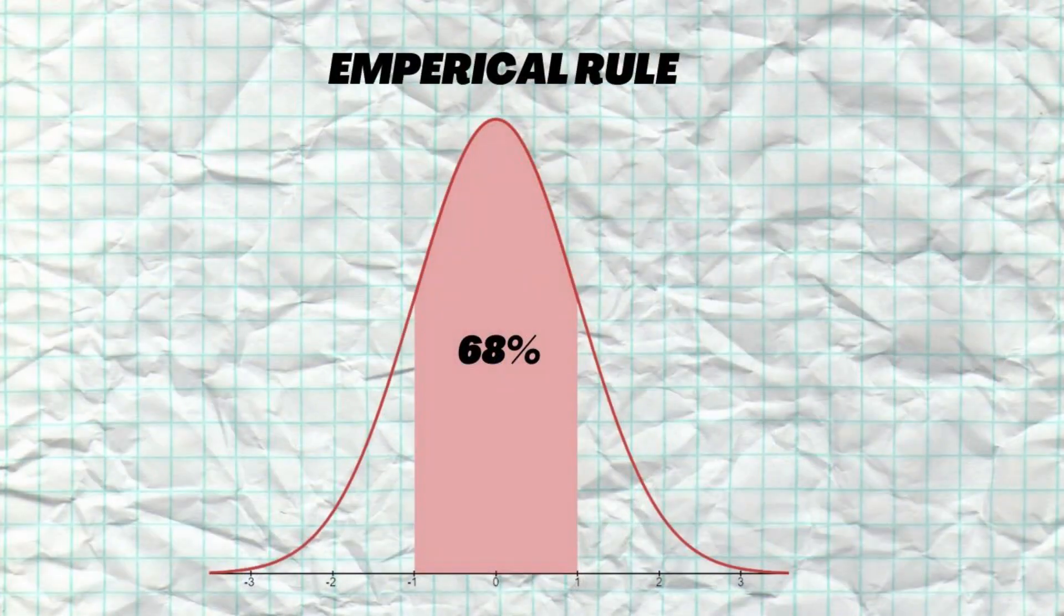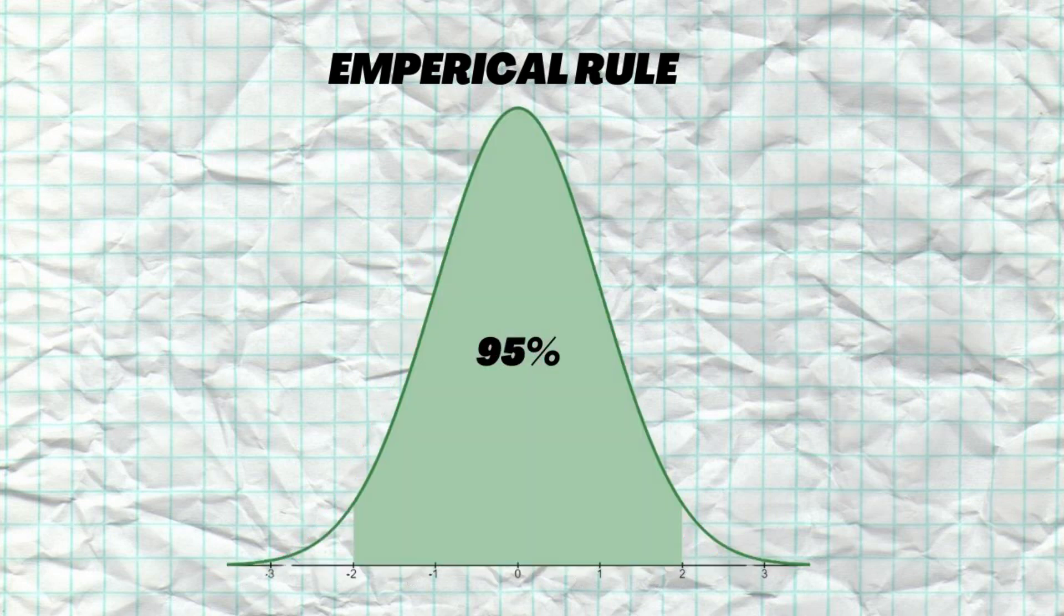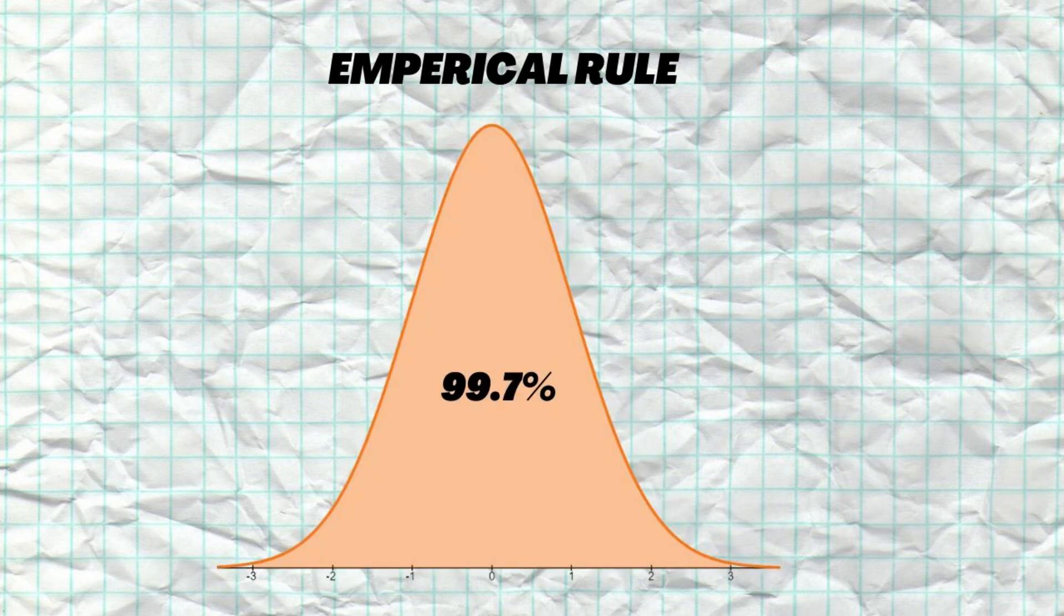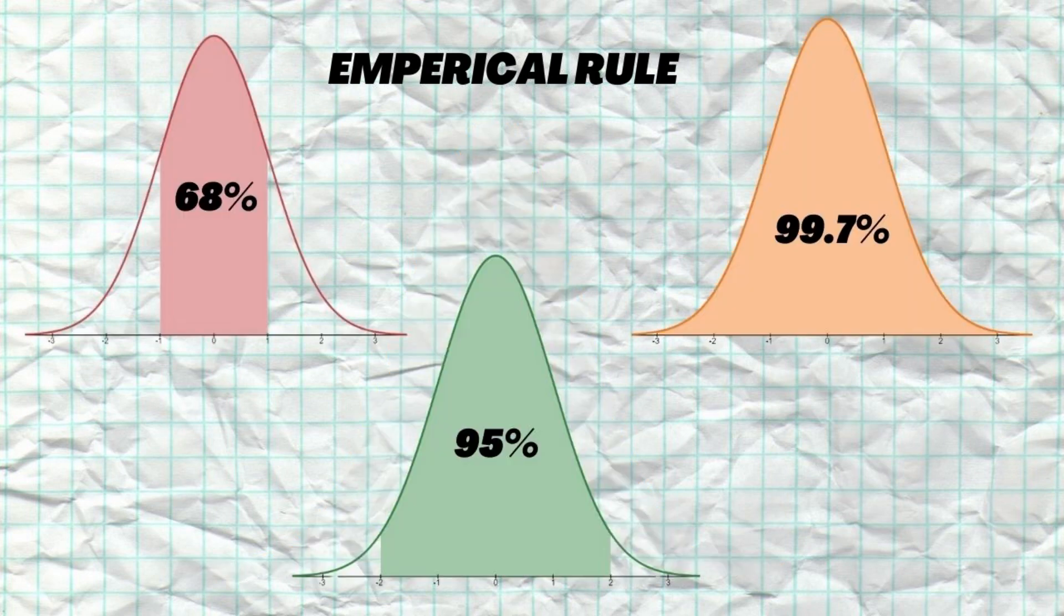Now, the normal model is continuous and extends indefinitely in both directions. So when we draw it, we typically don't extend beyond negative three or positive three standard deviations from the mean. The reason for this is something called the empirical rule. The empirical rule tells us that 68% of all observations under a normal curve are from one to negative one standard deviations, 95% of all observations are within two standard deviations, and 99.7% of all observations are within three standard deviations of the mean. So a value outside of negative three or positive three would be extremely rare, unlikely, and significant if it did happen.